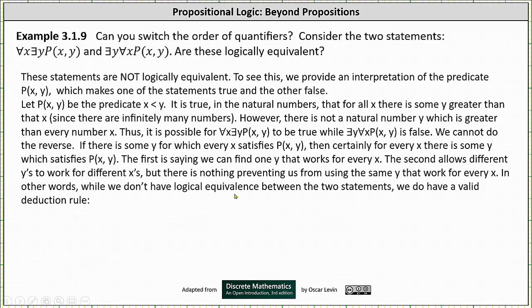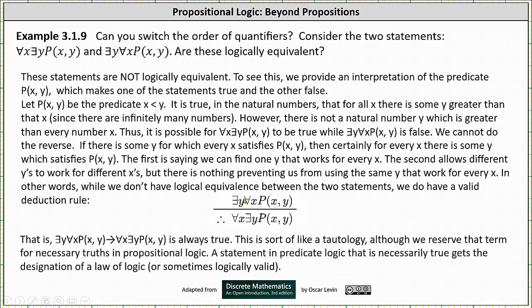In other words, while we don't have logical equivalence between the two statements, we do have a valid deduction rule: there exists a y for every x such that P(x, y), therefore for every x there exists a y such that P(x, y).